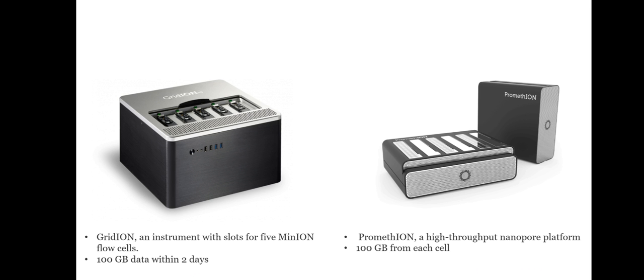In addition, PromethION, a high-throughput nanopore platform, was tested by early access users. GridION contains only five flow cells, whereas PromethION contains 48 flow cells. Around 100 gigabytes of data can be obtained from each flow cell in PromethION.